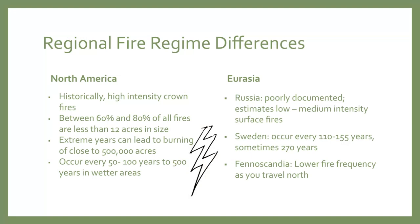There are some differences between fire regimes in North America and Eurasia. In North America, they have high intensity crown fires. Between 60% and 80% of all fires are less than 12 acres in size, so most fires are quite small. But in extreme years, they can lead to burning of close to 500,000 acres, which is a very large disturbance. These fires occur every 50 to 100 years, even up to 500 years in the wetter areas. In Eurasia, for Russia there is limited data on fire occurrence, but it's estimated to have low and medium intensity surface fires. In Sweden, fire occurs about every 110 to 155 years, sometimes 270 years. In Fennoscandia, the further north you travel, the lower the fire frequency is.